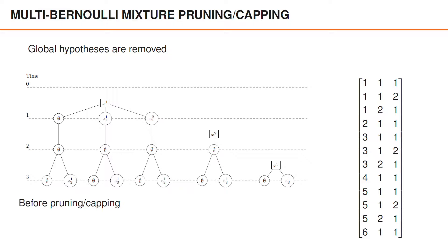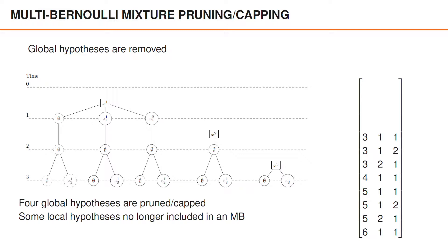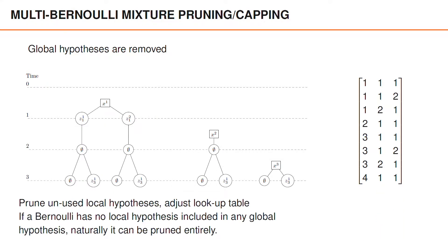We have the local hypotheses and the lookup table before the pruning and the capping. Now let's say that four of the global hypotheses are pruned or capped. Note that now some of the local hypotheses are no longer included in any of the multi-Bernoullis, and therefore we prune the unused local hypotheses and we adjust the lookup table accordingly.